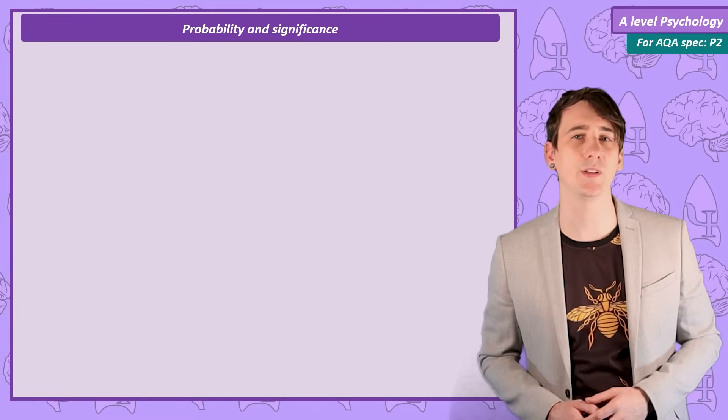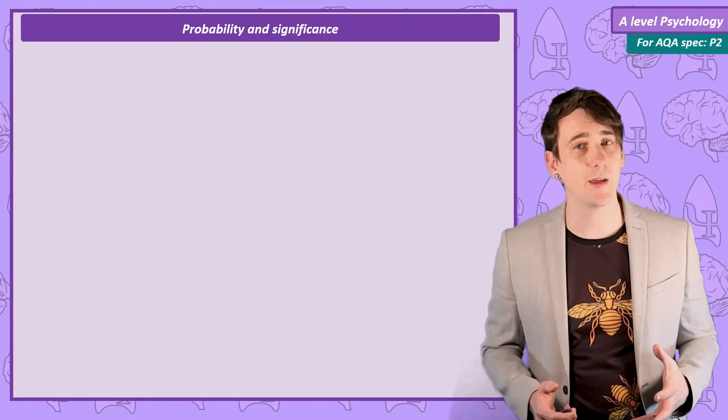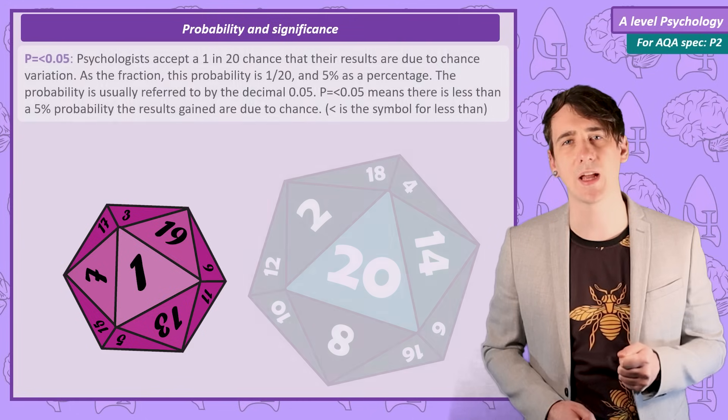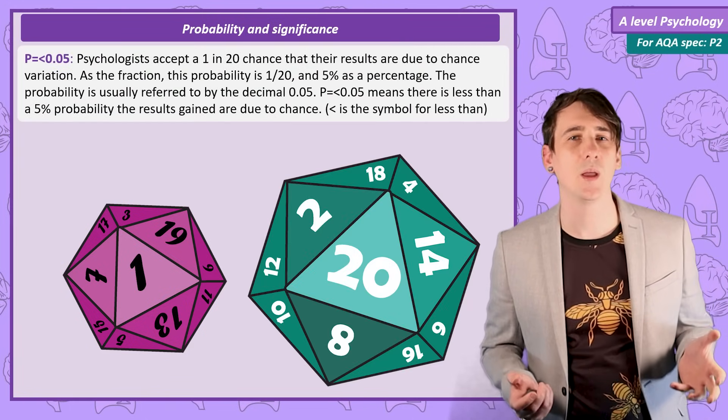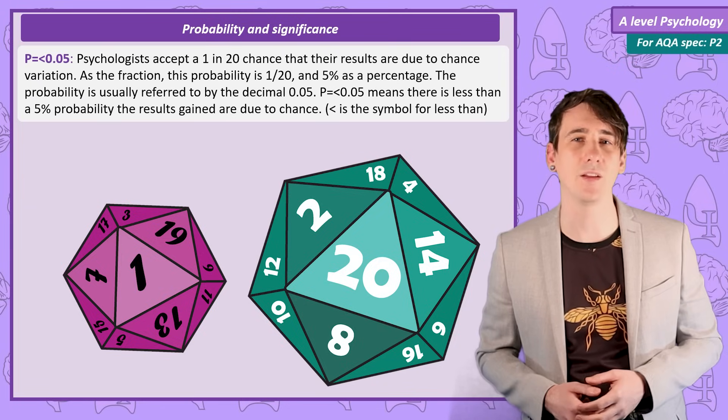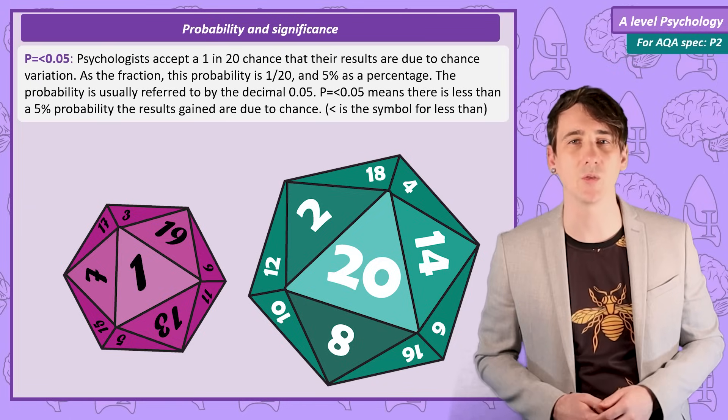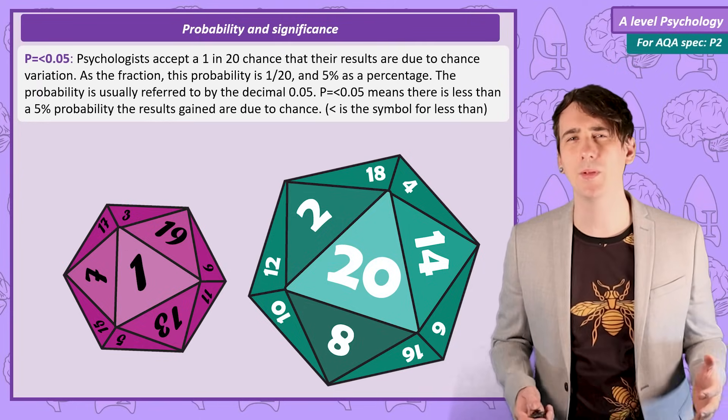0.05, also known as 5%, also known as 1 in 20. Psychologists do have an agreed probability at which point we accept an alternate hypothesis, and accept the risk that the results are due to chance variation. This is a 1 in 20 chance, also known as the 5% level of significance, or more formally, p is less than 0.05. 0.05 is the decimal that equals 5%, so 1 in 20. And that little arrow means less than.